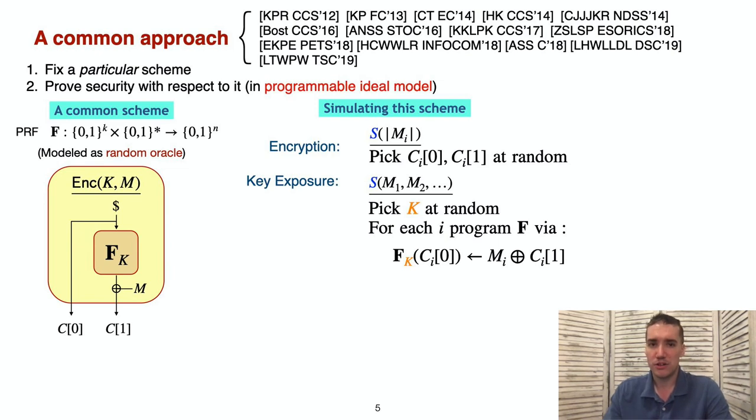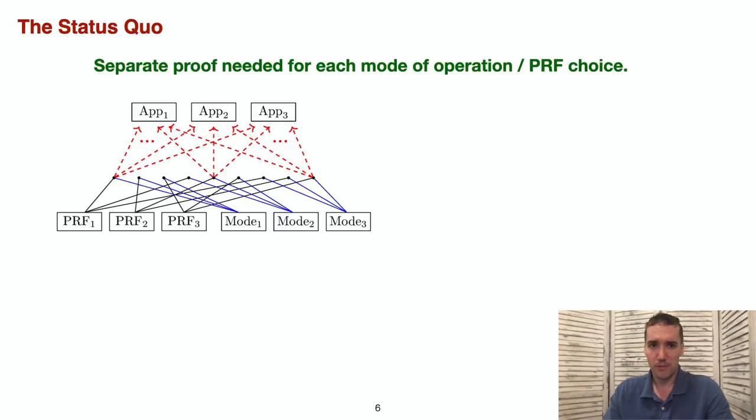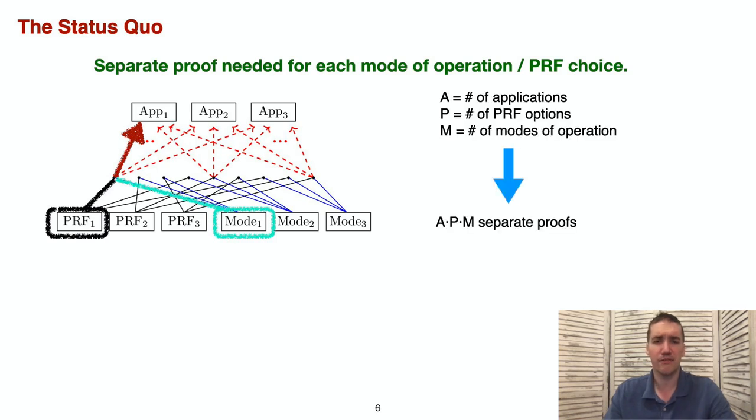However, this leaves us with some questions. What if we want to use a PRF that can't be thought of as a random oracle? Say, some block cipher, which is better modeled as an ideal cipher. What if we want to use a different mode of operation with this PRF? Following the status quo for this, we would need to write completely separate proofs for each choice of a mode of operation, PRF, and application that we want to prove secure.